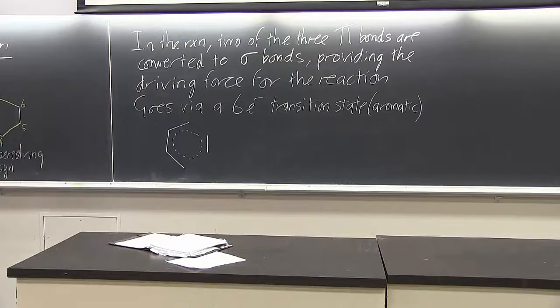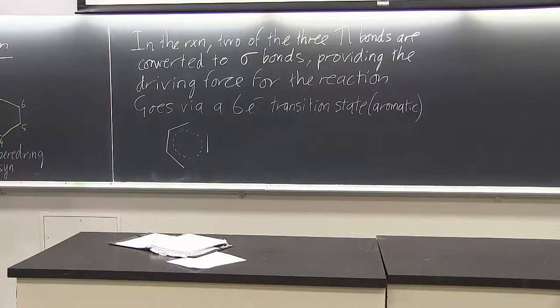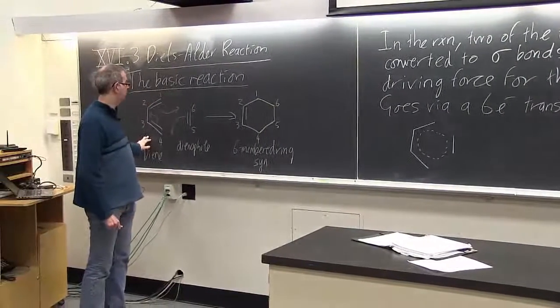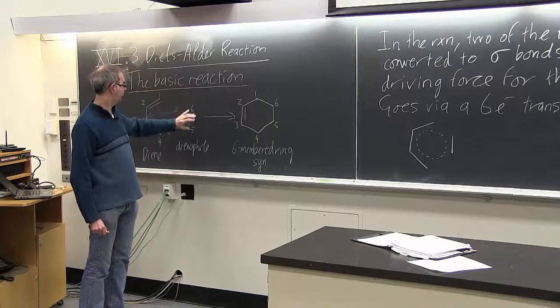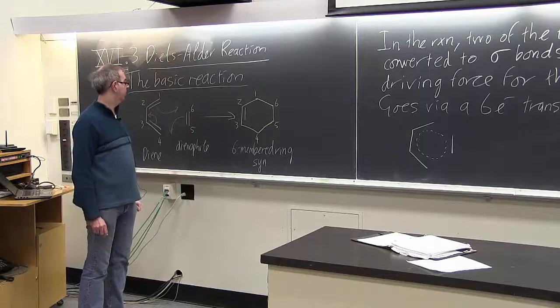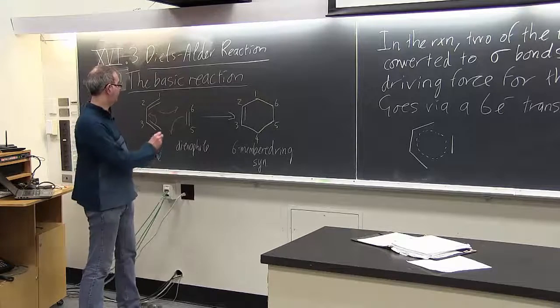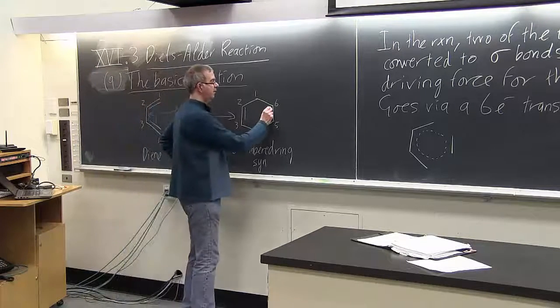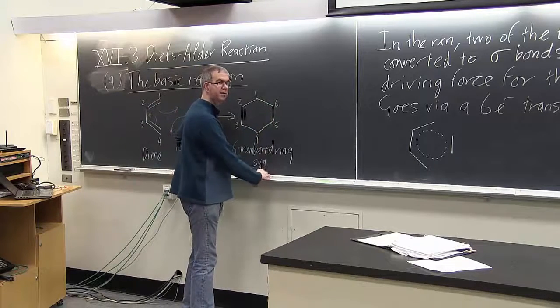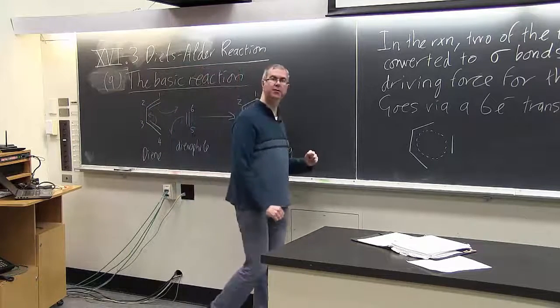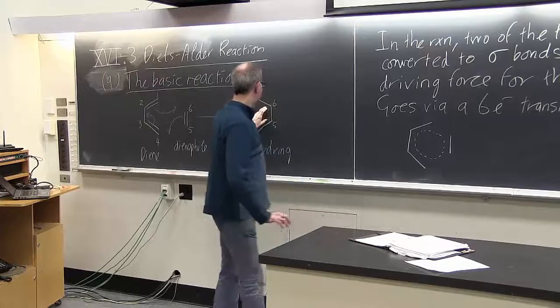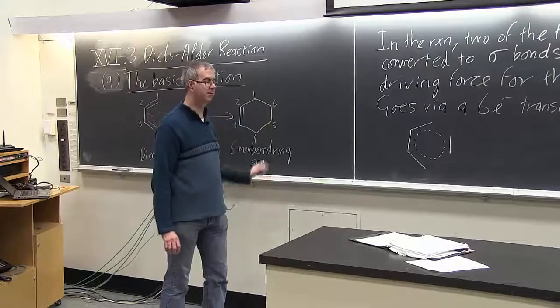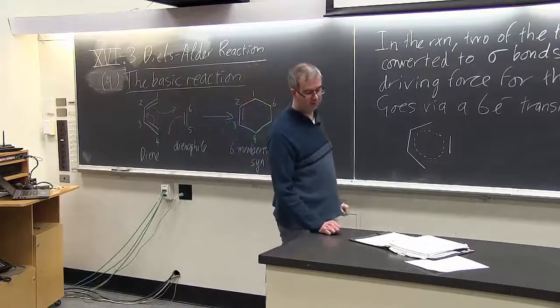Now we can also have all sorts of groups attached to our diene, plus we can have groups attached to the dienophile. And we can even have a third bond. We can have an alkyne here. And if we have an alkyne, that gives us an extra pi bond in the starting materials. That ends up as a leftover pi bond between carbons five and six. And I'll show examples of those in a moment.